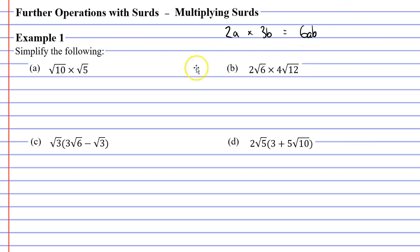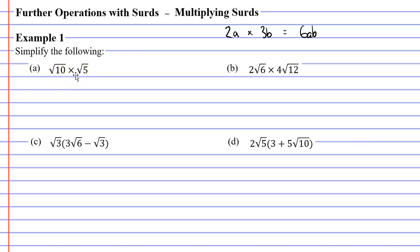When we multiply the surds, we're going to be following the same steps. We start by multiplying the whole numbers together, and second, we multiply the surds together. So we'll start with question a. For question a, we don't actually have any whole numbers, so we can go straight into step two and just multiply the surds.